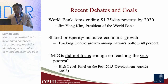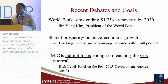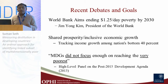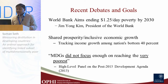In recent debates and goals, the World Bank has mentioned that the aim is to drastically reduce $1.25-a-day poverty by 2030. There has also been discussion of understanding shared prosperity by looking at the growth of the bottom 40% of the population. At the same time, the high-level panel on the post-2015 development agenda has noted that MDGs did not focus enough on the poorest.